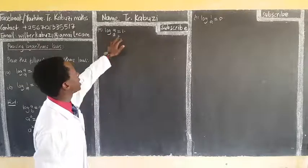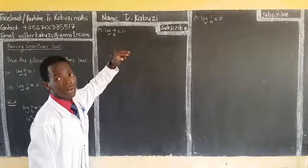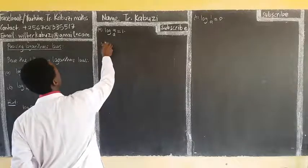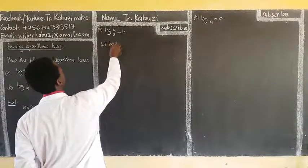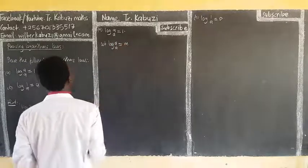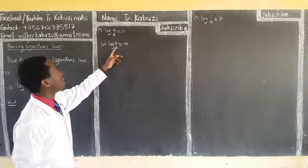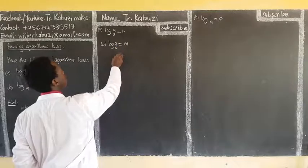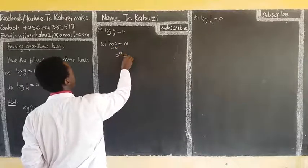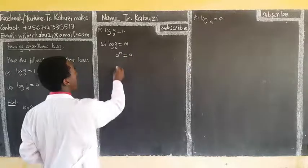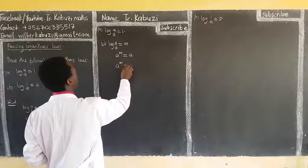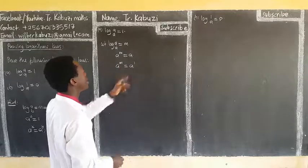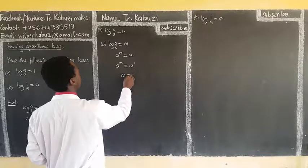Looking at the left hand side, I want to prove it is equal to the right hand side. I say let log of A to base A be M. Using this property, it means that what is raised to A to get A is M. So A power M is equal to A. But any number without a power means it is power 1, so this is A power 1. Numbers of the same base means the powers are equal, so M is 1.